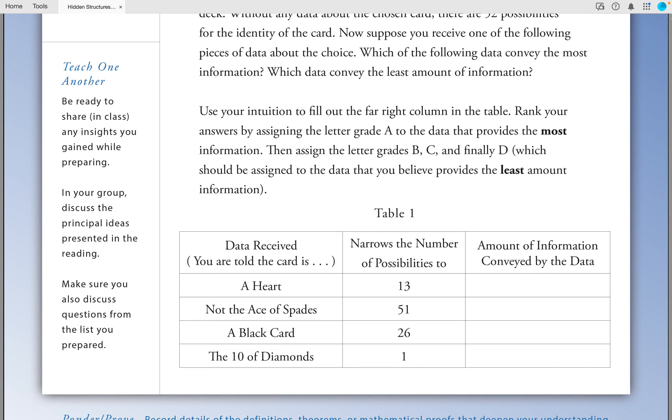Data received: You are told that the card is a heart, or that it's not the Ace of Spades, or it's a black card, or it's the Ten of Diamonds.